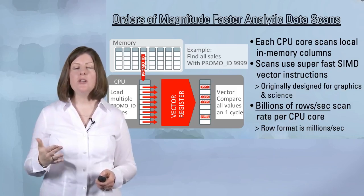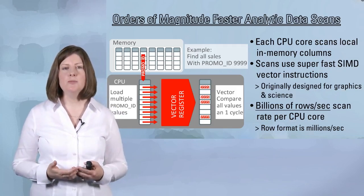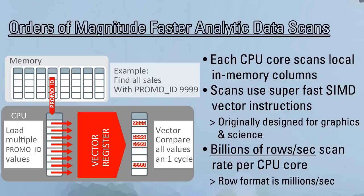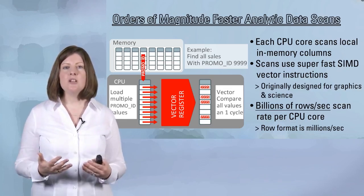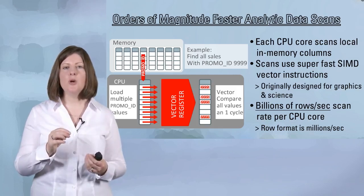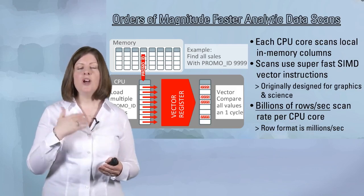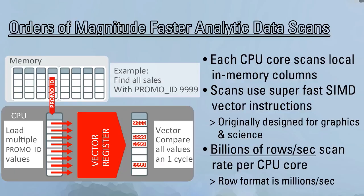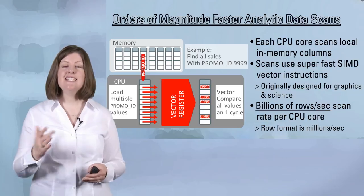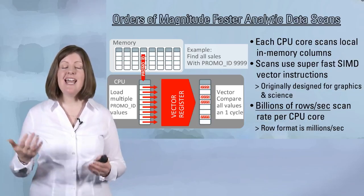We have one final component to speed up scan performance in the in-memory column store, and that's SIMD vector processing — single instruction multiple data. SIMD vector processing is not new; it wasn't invented by Oracle. It's actually been around since the late 60s and early 70s with the introduction of supercomputing, and it's also used a lot in computer-generated animation. SIMD vector processing allows us to apply the where clause predicate to a set of values from a column rather than one entry at a time, enabling array processing within a single CPU instruction. This allows us to scan billions of rows per second per core, instead of the tens of millions of rows per second we can scan in the buffer cache today.